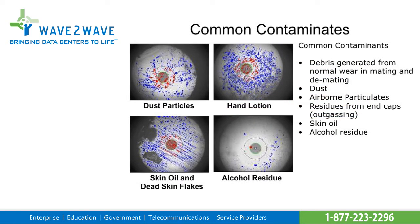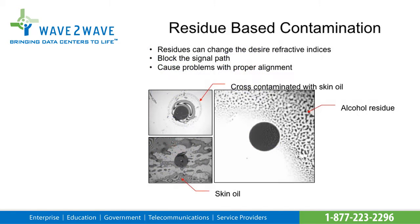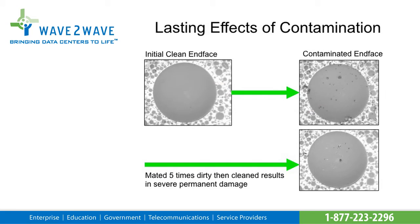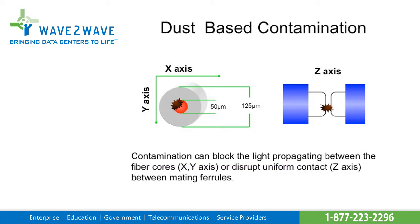Some common contaminants are debris generated from normal wear and tear in mating and demating of connectors, dust, airborne particulates, residue from end caps, skin oils, and alcohol residue. Dust, dirt, and airborne particulates are the main contributors to network failures. These contaminants can block the optical paths that transmit data, causing signal degradation and ultimately failures.